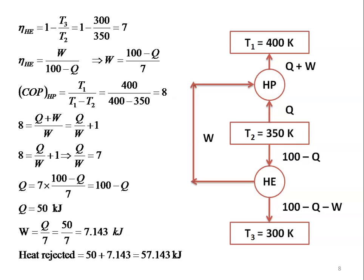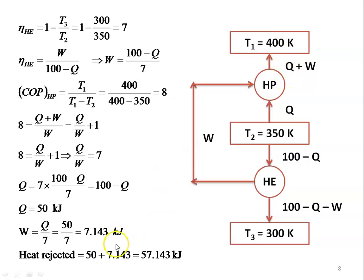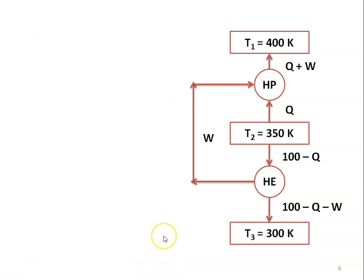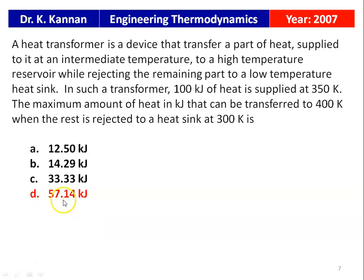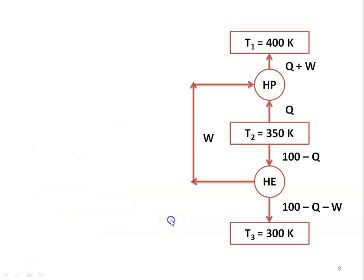The heat delivered to the high temperature reservoir = Q + W = 50 + 7.143 = 57.143 kJ. The correct answer is option D: 57.14 kJ.